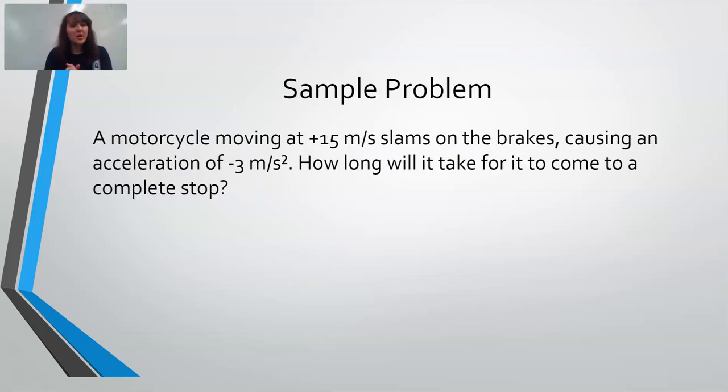So let's try using this definition out. Say we've got a motorcycle moving at 15 meters per second, and then there is a family of ducks crossing the street. The motorcycle has to stop. So it hits the brakes, experiences an acceleration of negative 3 meters per second squared, the negative indicating that this motorcycle is slowing down. How long is it going to take for this motorcycle to come to a complete stop? Try it out on your own first.